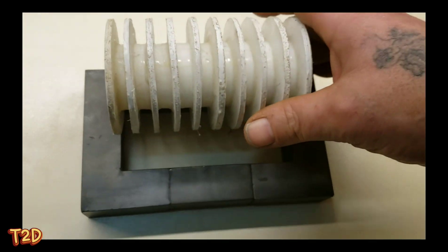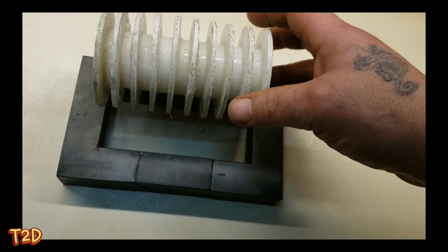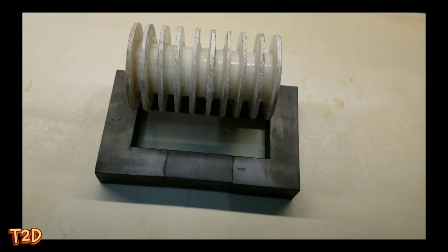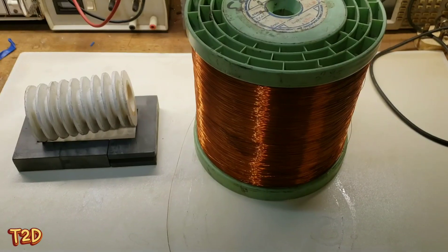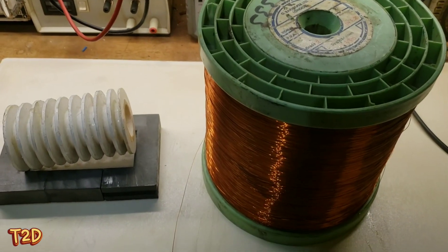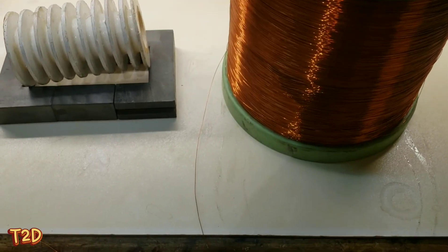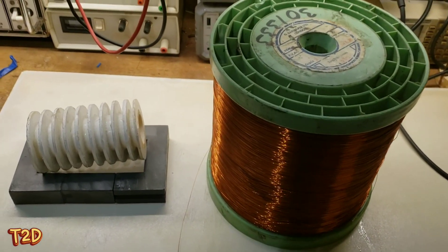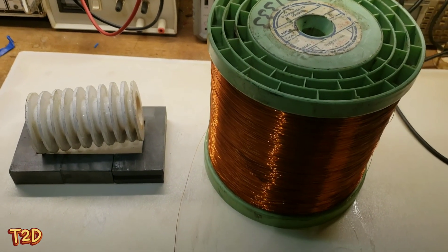So I thought we'd have a go at winding one and see what we can achieve from this. We'll give it a good test and see what we can do. This is 0.33 gauge copper enamel wire and I've got a fair bit of this, as you can see. So this is what we're going to use.